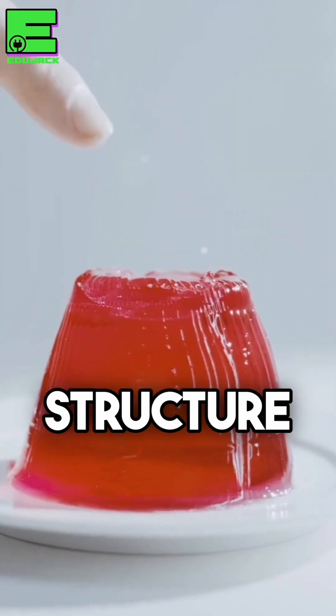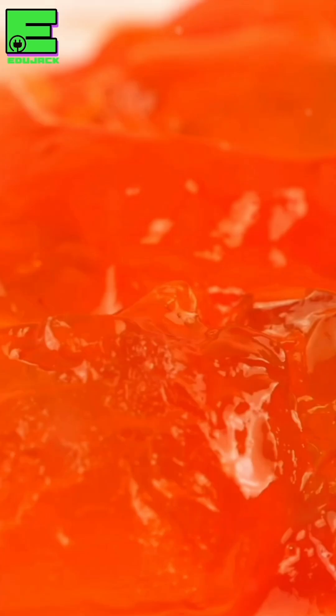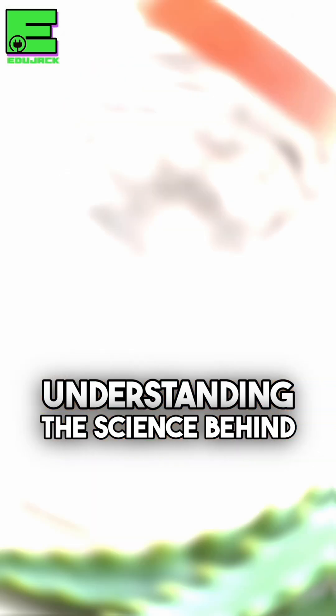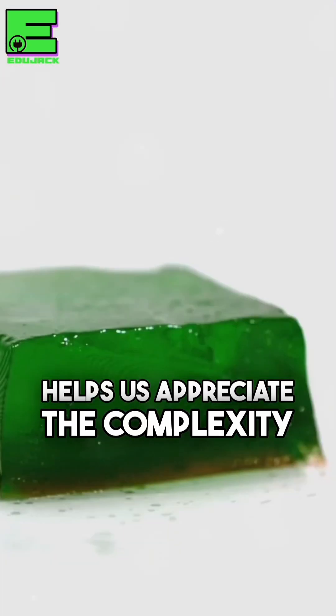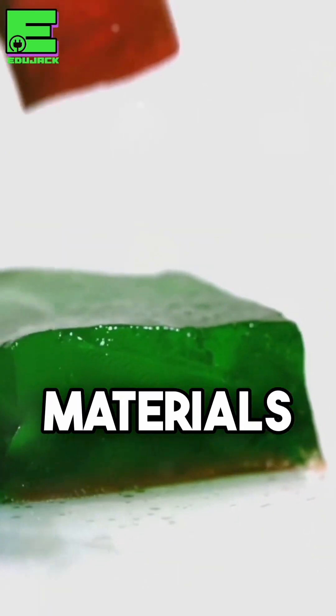This unique structure is why Jell-O is considered a gel, not a true solid or liquid. Understanding the science behind Jell-O's state of matter helps us appreciate the complexity of everyday materials.